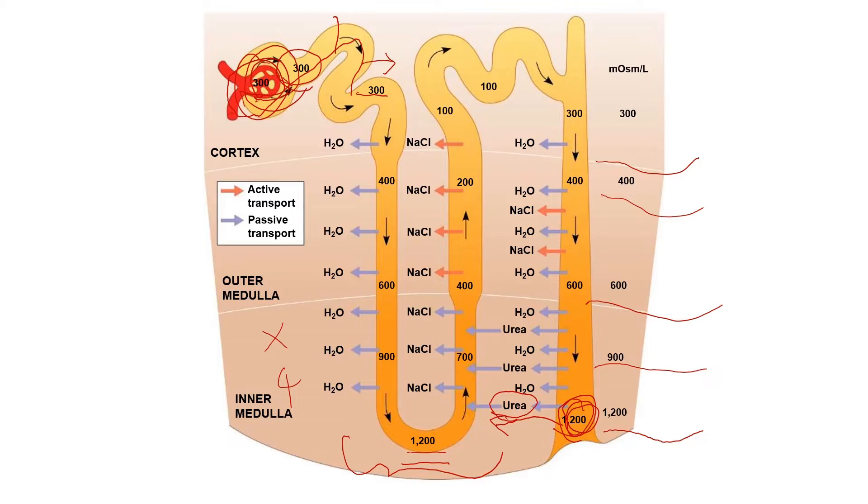As the filtrate flows from the cortex to the medulla in the descending limb of the loop of Henle, water leaves the tubule by osmosis. Solutes, including sodium chloride, become more concentrated, increasing the osmolarity of the filtrate from 400 to 600 to 900 and up to 1,200. The highest osmolarity, 1,200 milliosmoles per liter, occurs at the elbow of the loop of Henle.